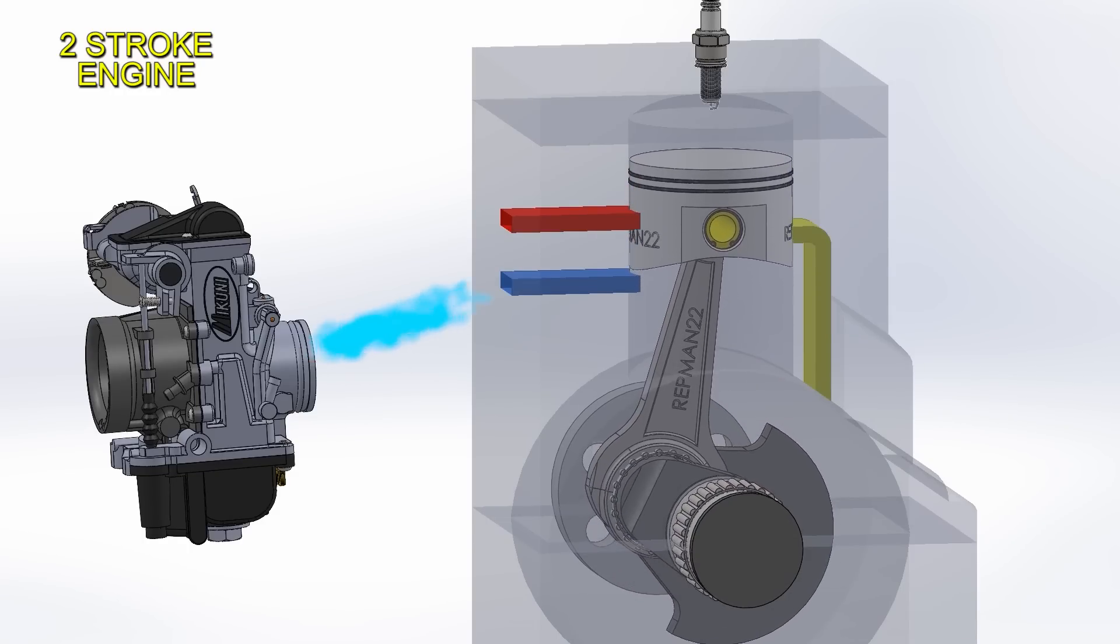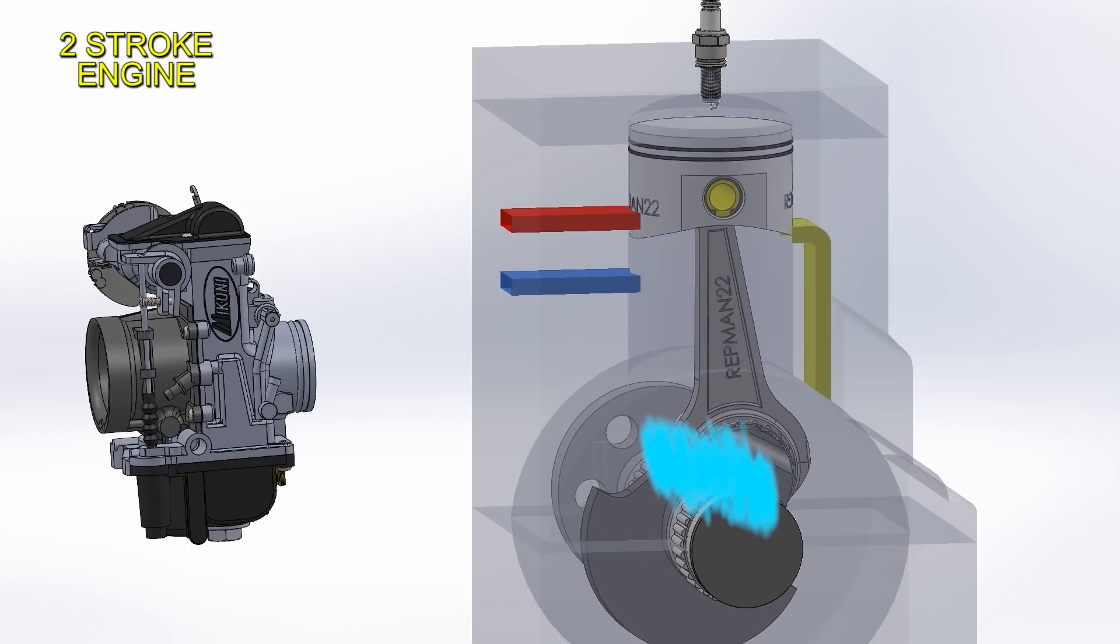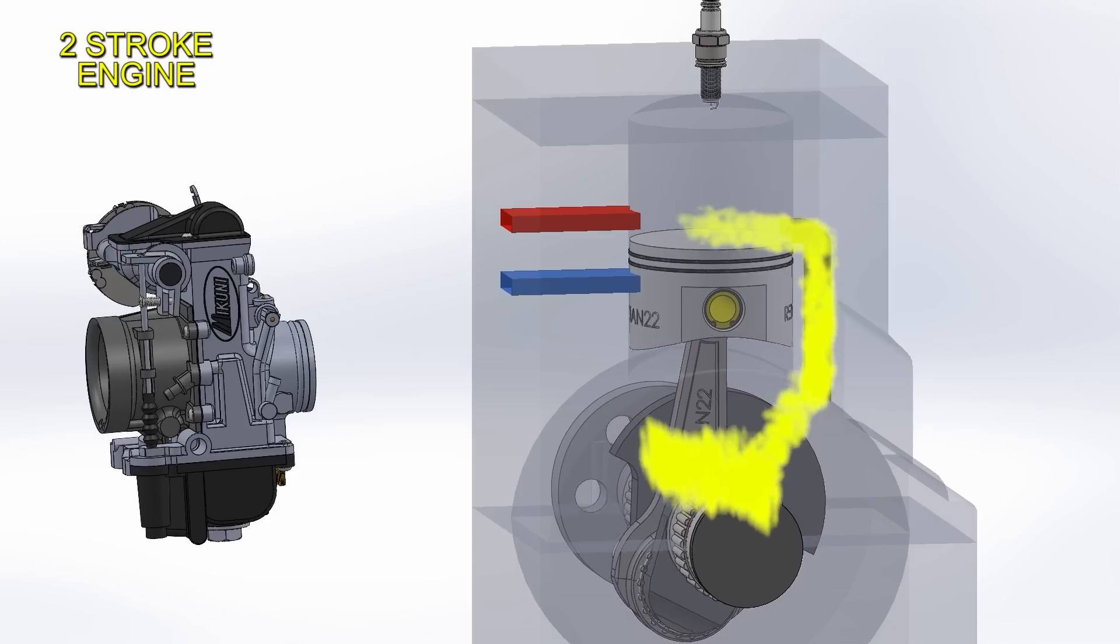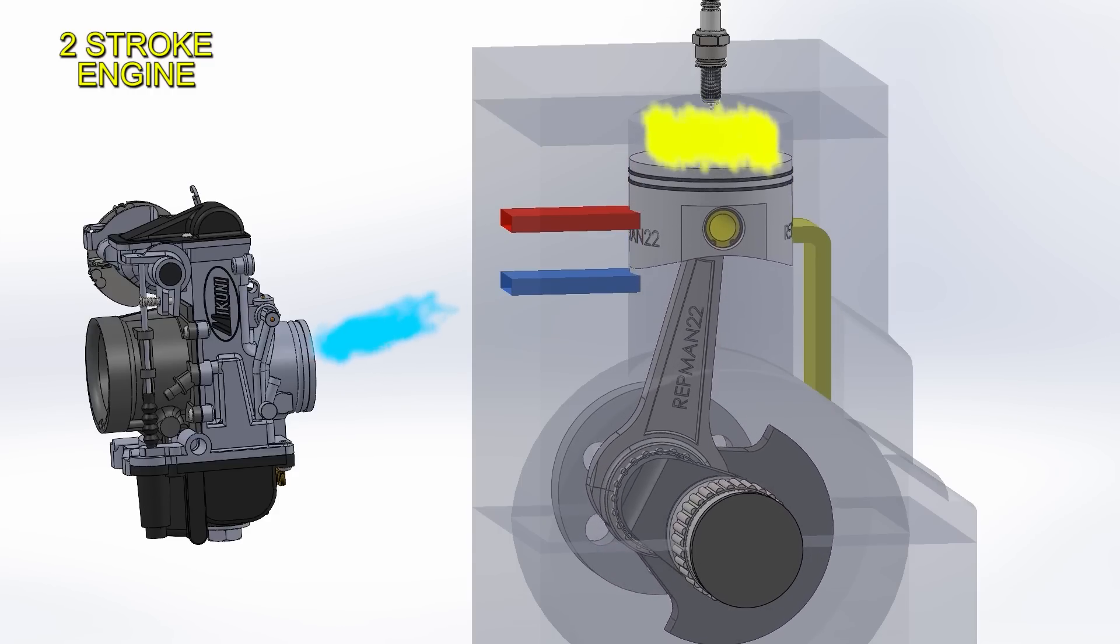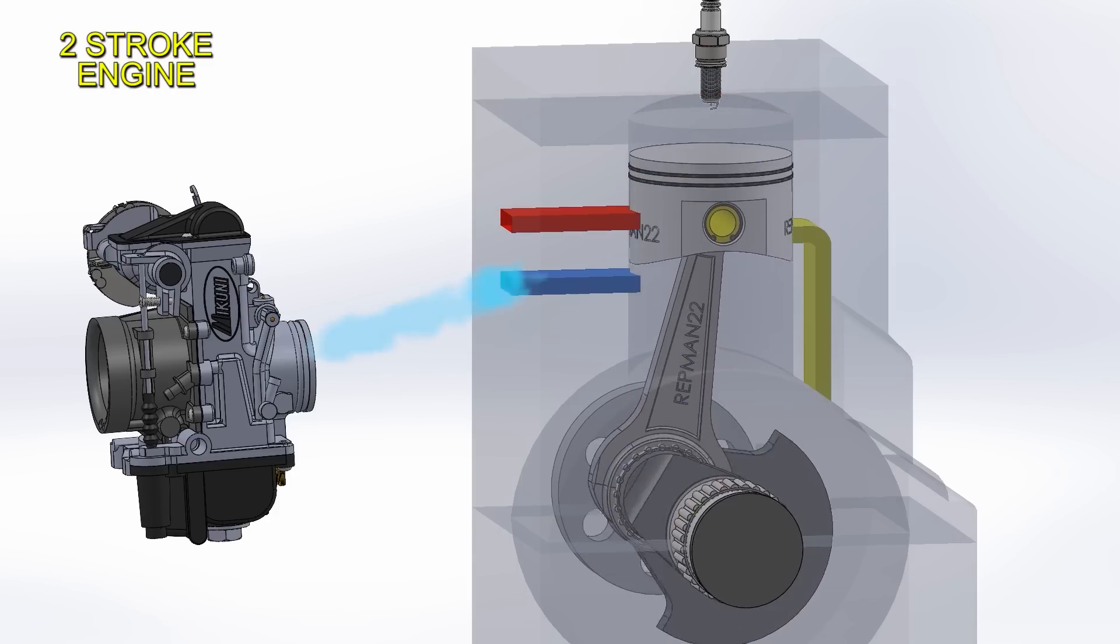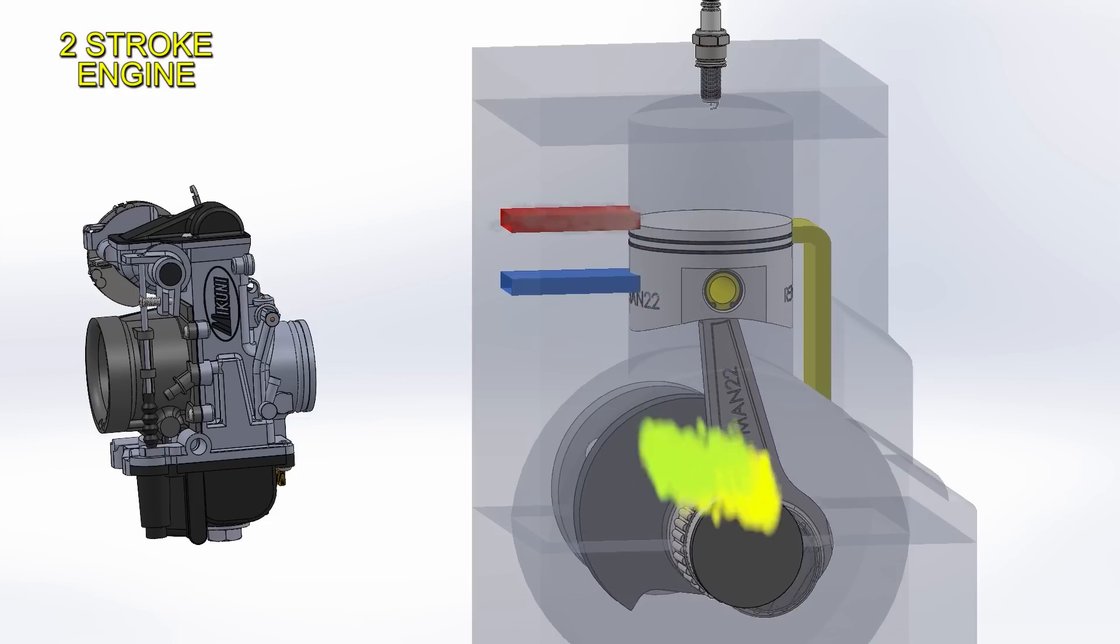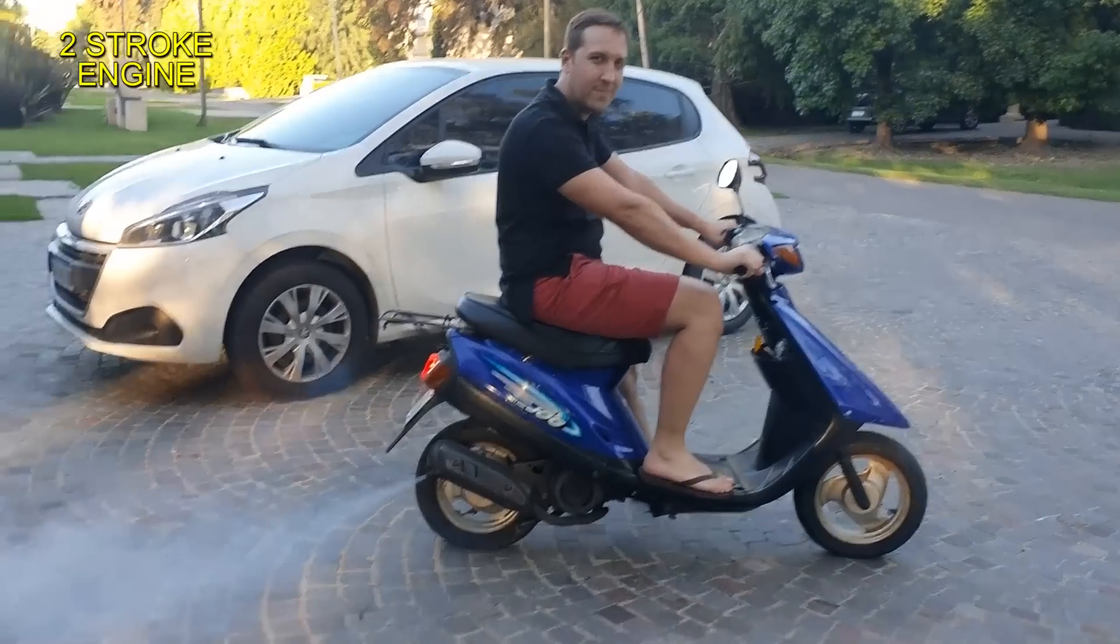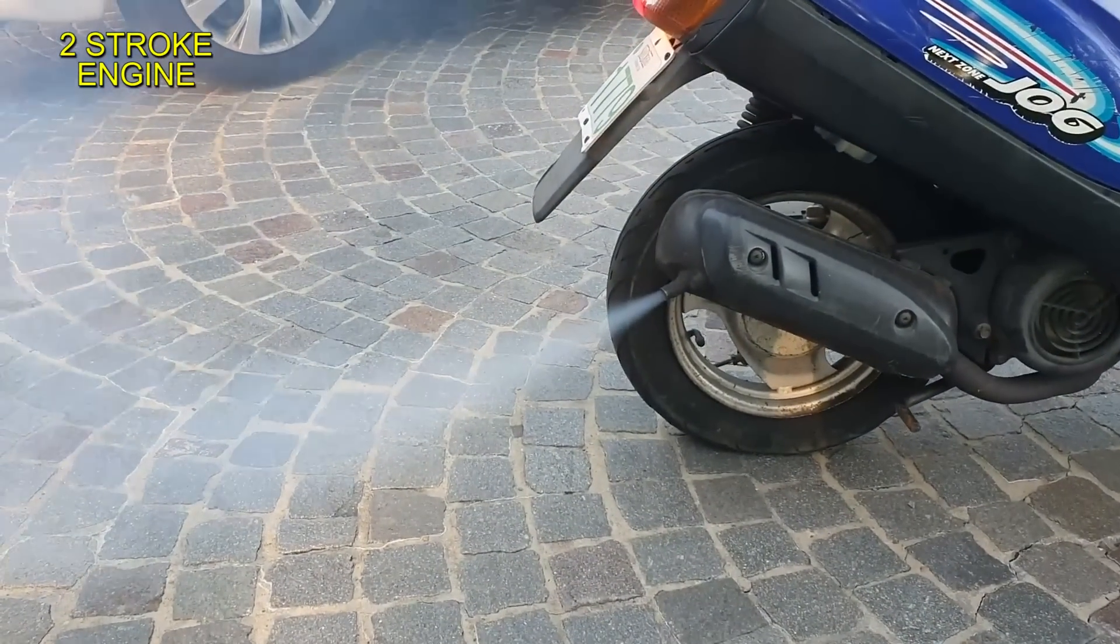Now, a two-stroke engine must use the crankcase to draw in the mixture. Then pre-compress it to send the mix to the cylinder, and finally recompress and burn. This means that oil cannot be placed in the crankcase, since if there were, it would be dragged into the cylinder and burned. That's why oil is added into the mix, making the engine to pollute.